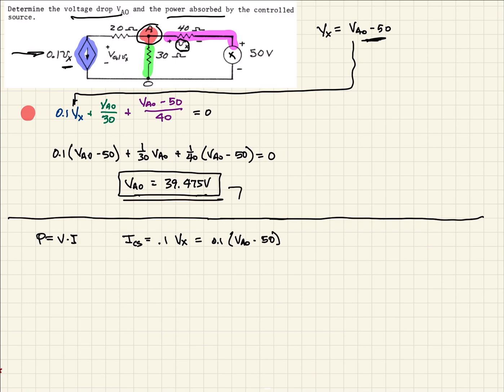Well, we found VA0 right there, so we can plug it in. So that is 0.1 times 39.475 minus 50. And when we calculate that out, it's going to be negative 1.0525 amps. So there's our current.